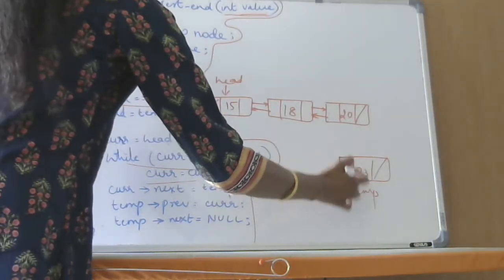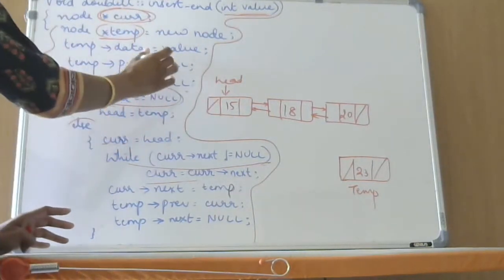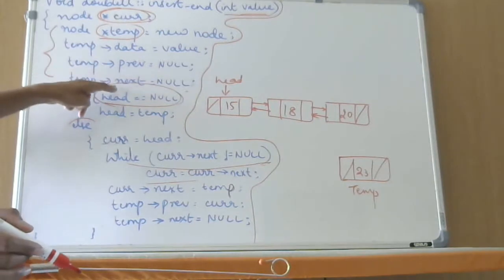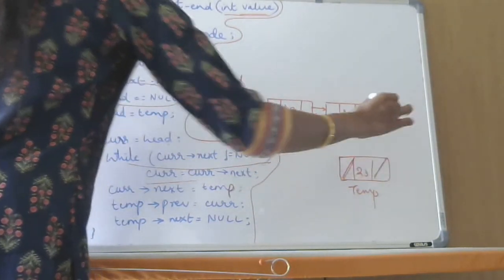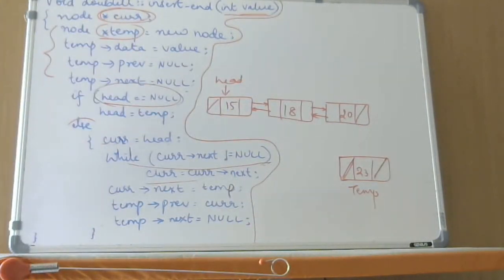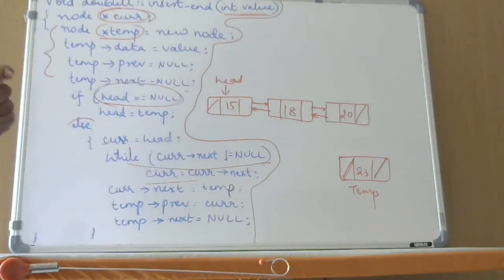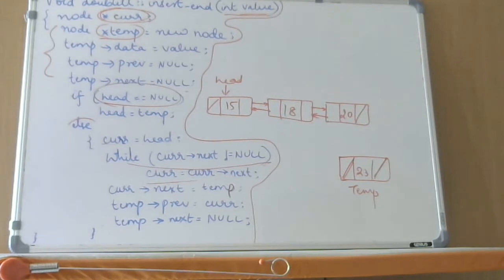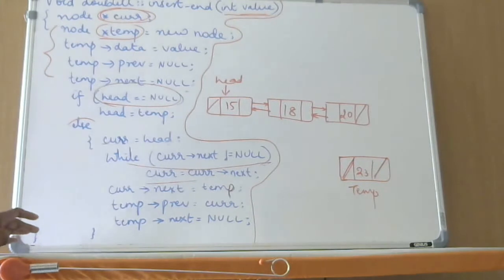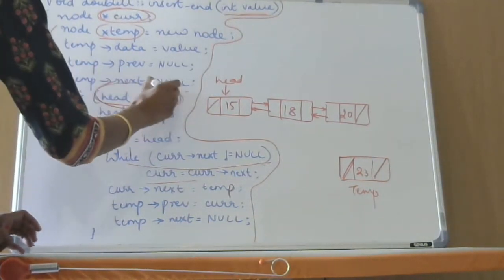This is the new node that I want to insert. Temp of data is value — whatever value I am accepting, I am putting it in the data part. Temp of previous and next both are null. So my node is now ready. Now I have to insert this node at the end. Before I insert, any insertion we do — so far we have seen — whenever we want to insert, we have to first check whether the list is empty or not. If the list is empty, then this will become the only node in the list.